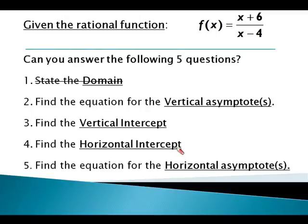So that takes care of the first question. The next question: Find the equation for the vertical asymptote.